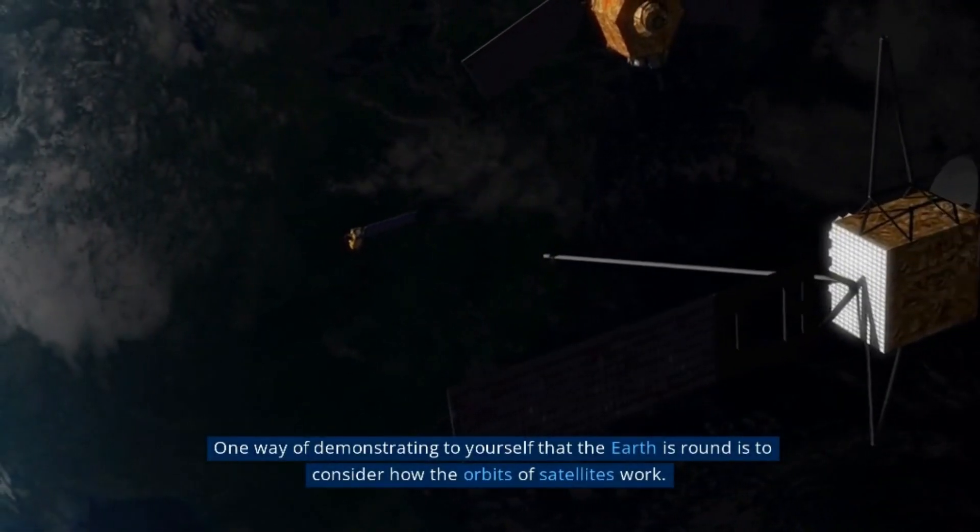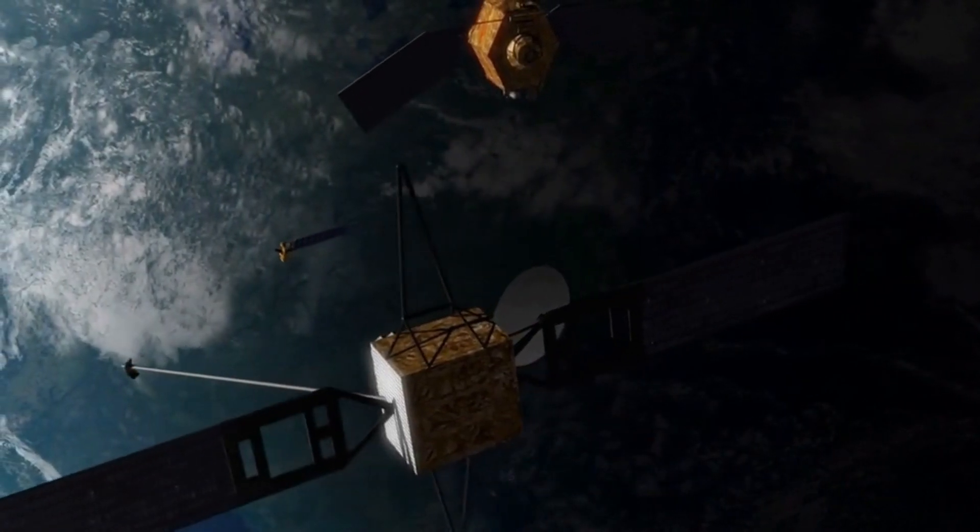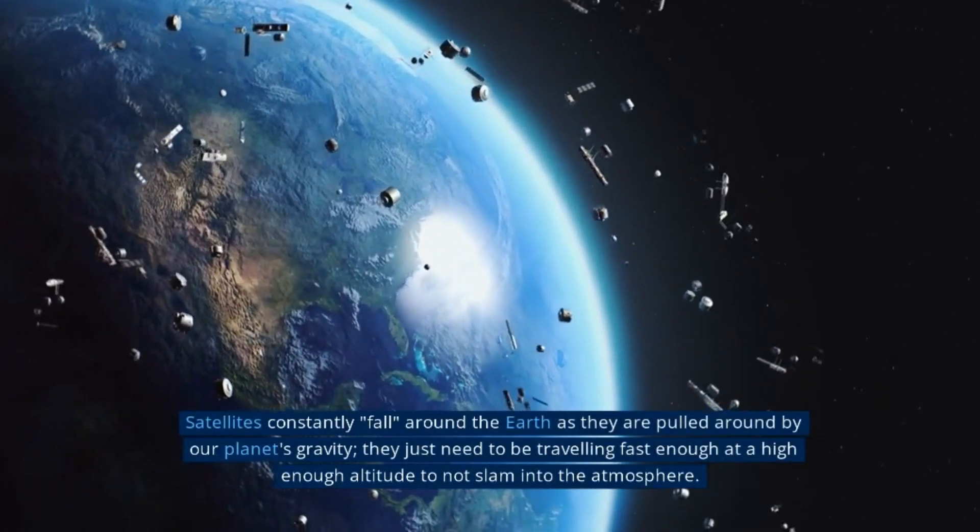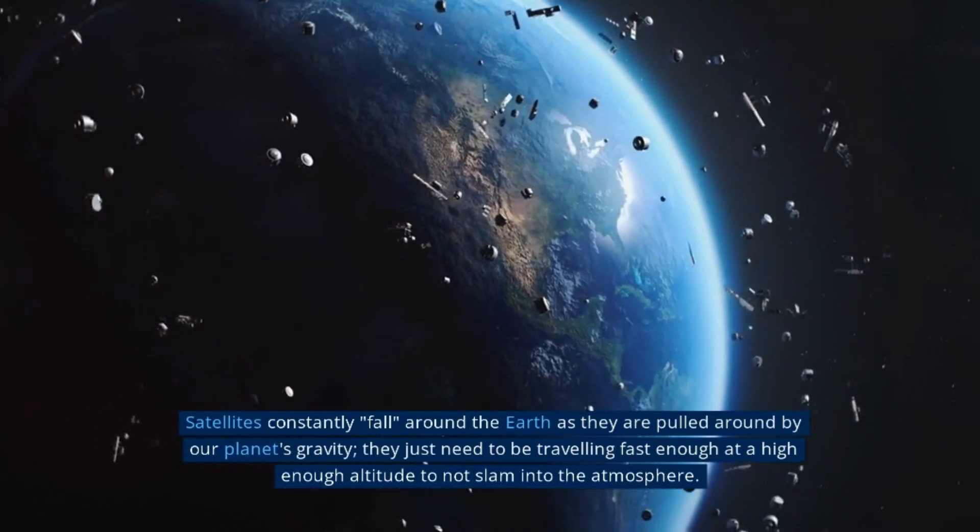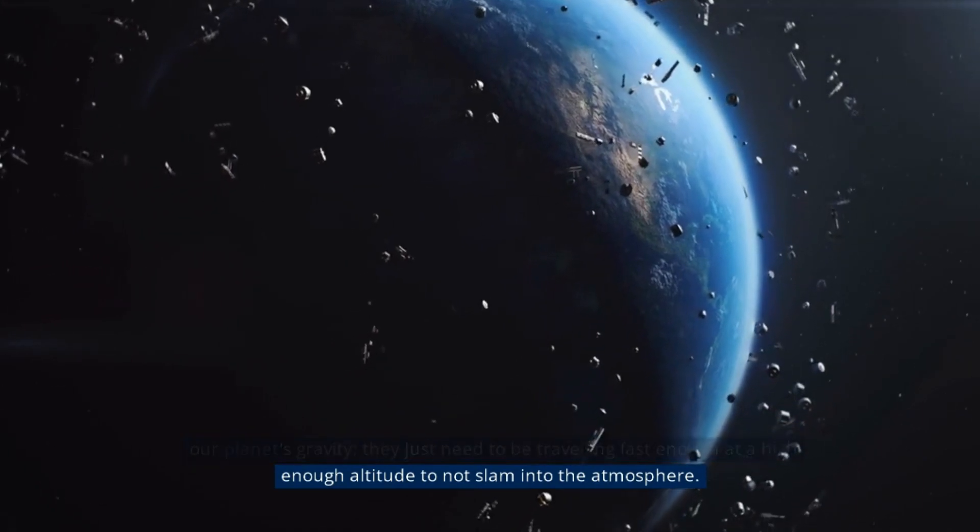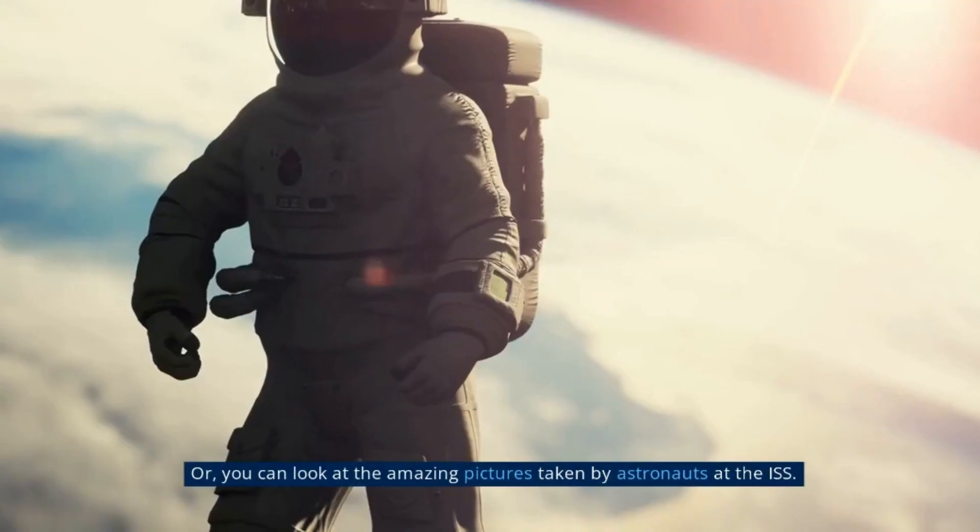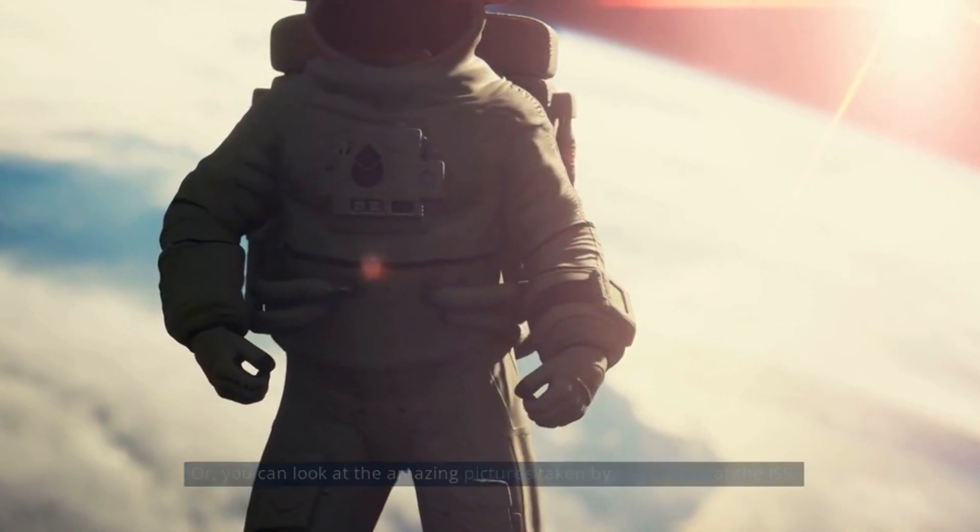One way of demonstrating to yourself that the Earth is round is to consider how the orbits of satellites work. Satellites constantly fall around the Earth as they are pulled around by our planet's gravity. They just need to be traveling fast enough at a high enough altitude to not slam into the atmosphere. Or you can look at the amazing pictures taken by astronauts at the ISS.